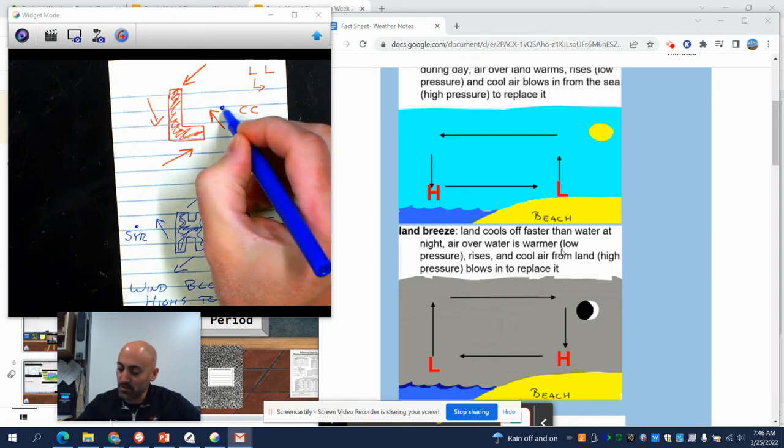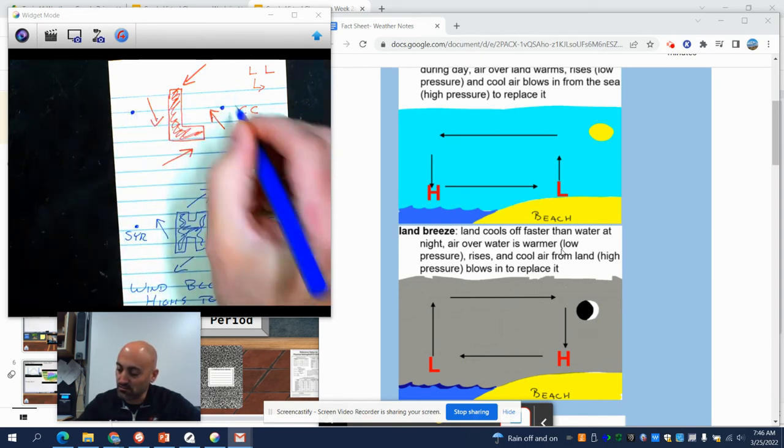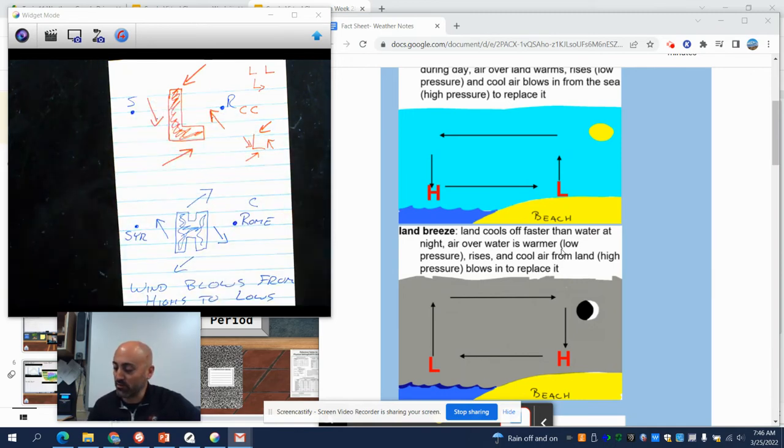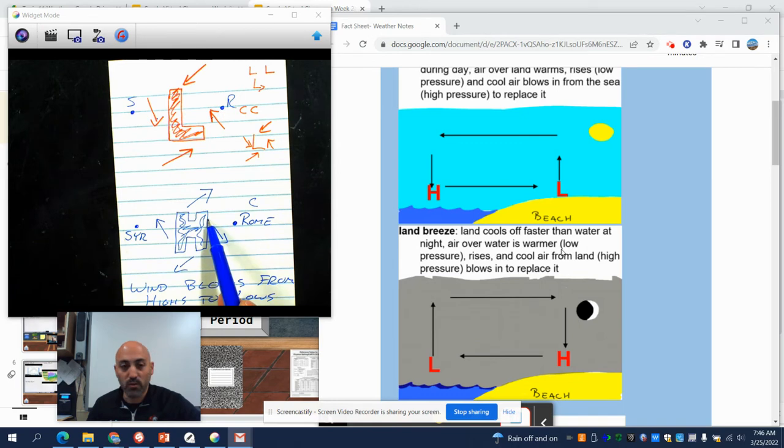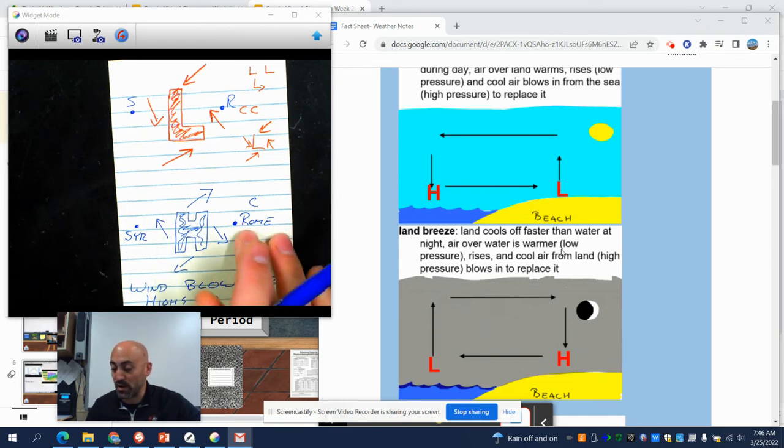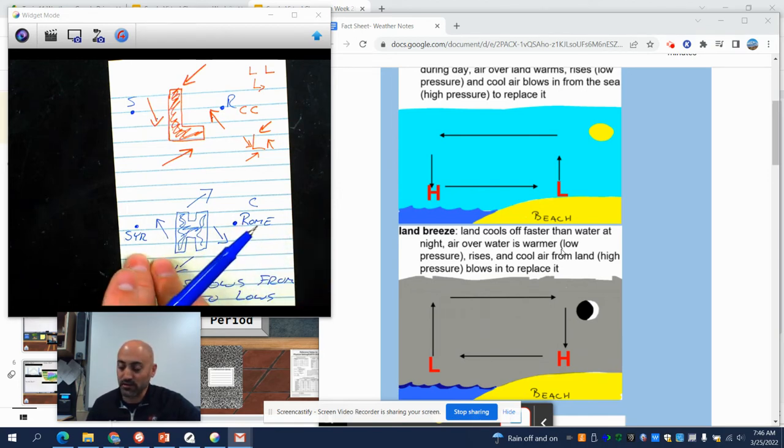Say this is Rome and this is Syracuse. The wind is blowing from different directions. Here, Rome has a northwest wind - it's coming from the northwest. Syracuse has a southeast wind. So Rome is probably getting cool wind and Syracuse is getting warmer wind because it's coming from the south.